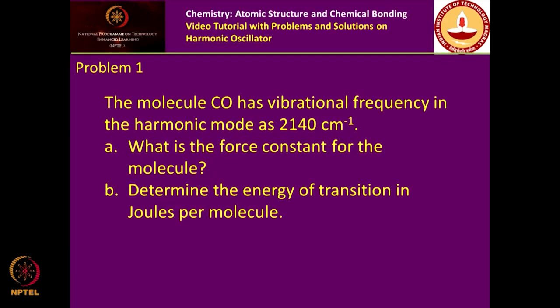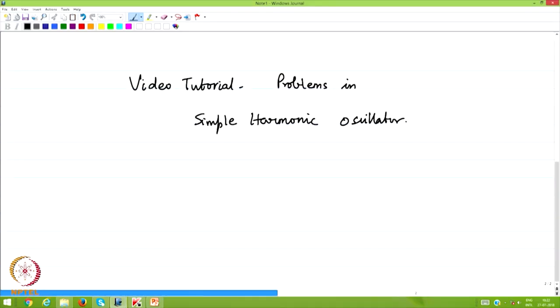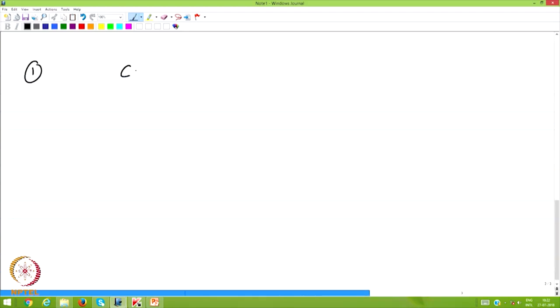The first problem: using the harmonic oscillator model and approximating molecular vibration as simple harmonic motion — that is possible at low and moderate temperatures when most molecules are in the ground vibrational state. The molecule carbon monoxide has a vibrational frequency in the harmonic mode of 2140 cm⁻¹. The question is: what is the force constant for the molecule?